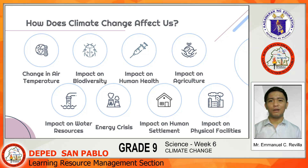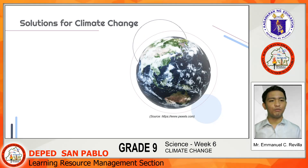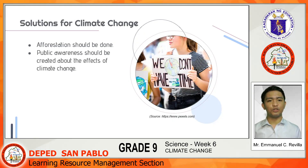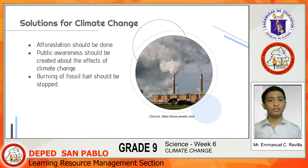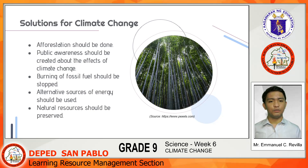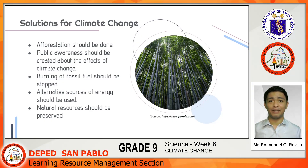Can we do something about climate change? Here are some ways to reduce its impact. Afforestation or conversion of land into forest should be done. Public awareness should be created about the effects of climate change. Burning of fossil fuel, the main contributor to greenhouse gases, should be stopped. Instead, alternative sources of energy like solar energy, wind, hydrothermal, and others should be used. Natural resources should be preserved, and pollution coming from industries and factories should be controlled and minimized.